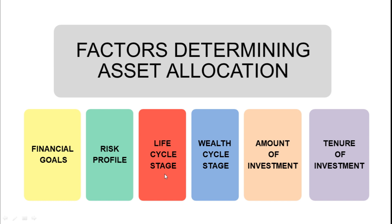If you are at mid age, you would be more conservative and investing in debt schemes and government funds which give a fixed return percent rather than taking higher risk. Wealth cycle stage is also linked with life cycle stage. When you are young, you are at the stage of wealth creation; when you are at mid age, you are at the stage of wealth preservation. At wealth creation stage you would try more options and invest for higher returns, whereas at wealth preservation stage you protect capital built up and try to generate an average return of about seven to eight percent. The amount of investment you have would also decide the diversification that could be done among different asset classes.